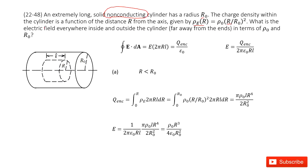The problem asks for the electric field at different locations. For the first location, we consider r is smaller than r0. So we can draw a Gaussian surface like this one. We can write down Gauss's law: the electric field times the Gaussian surface area.